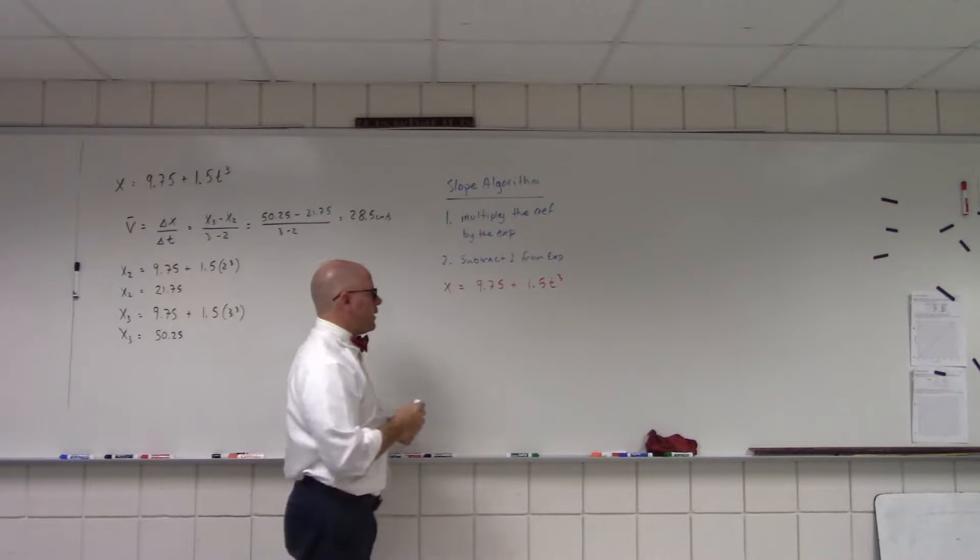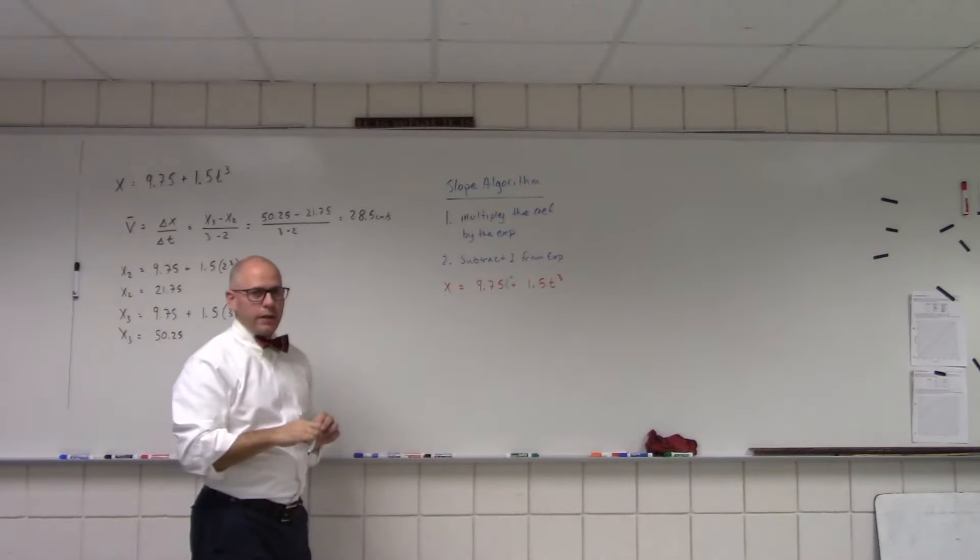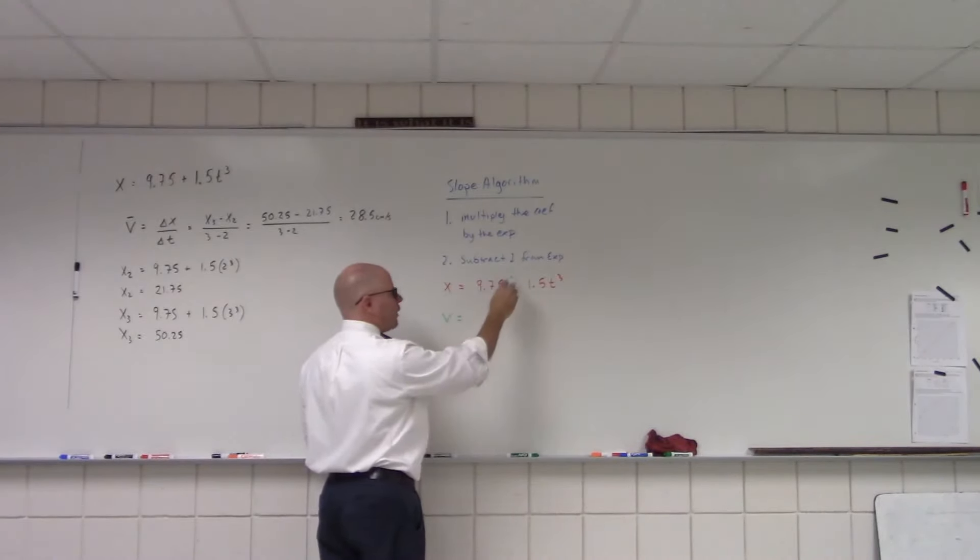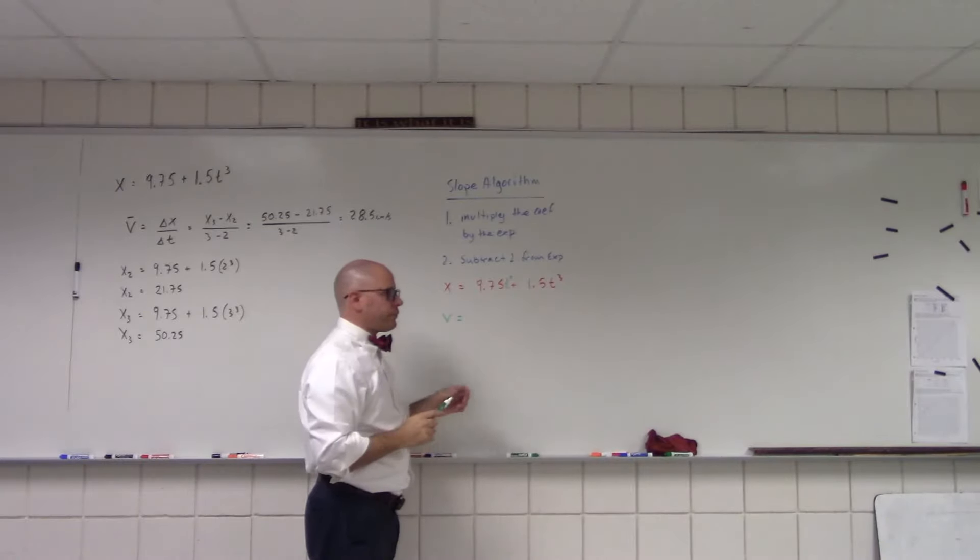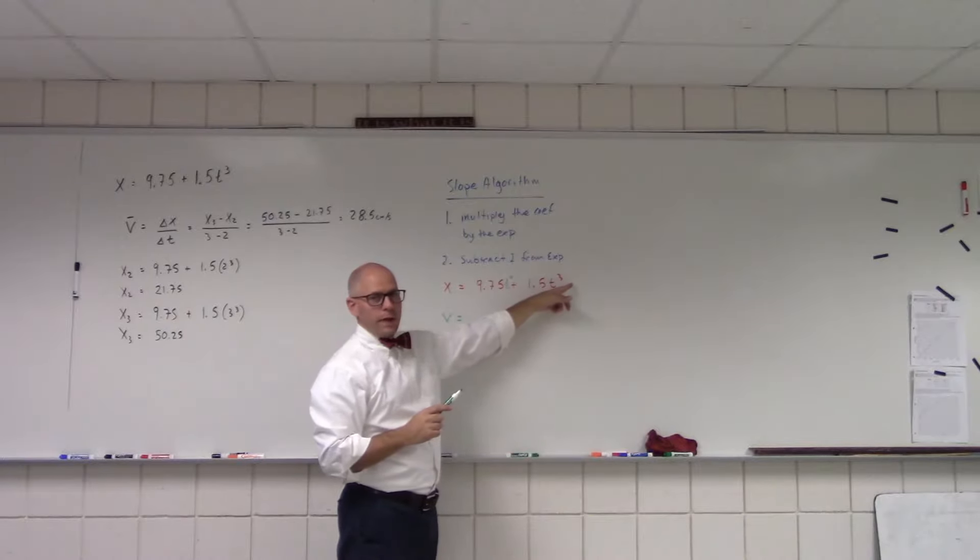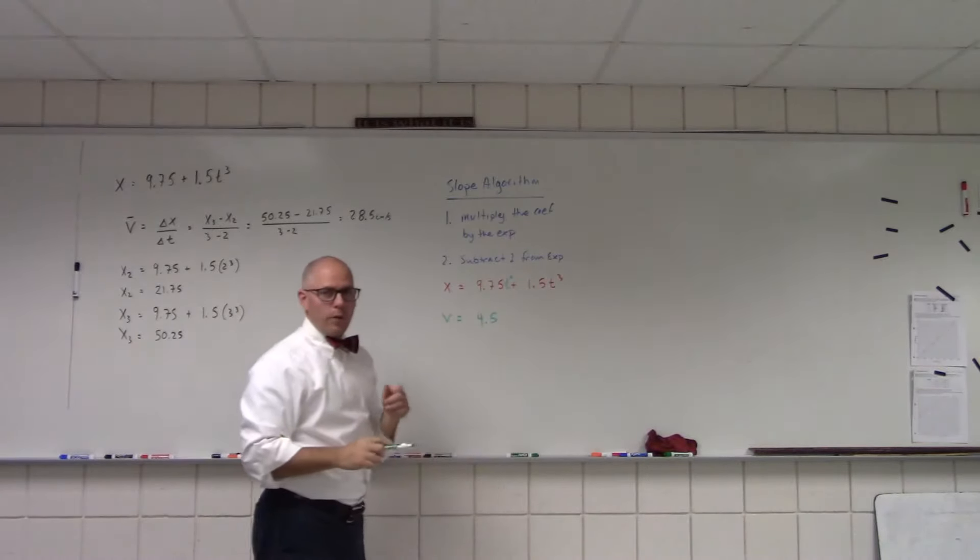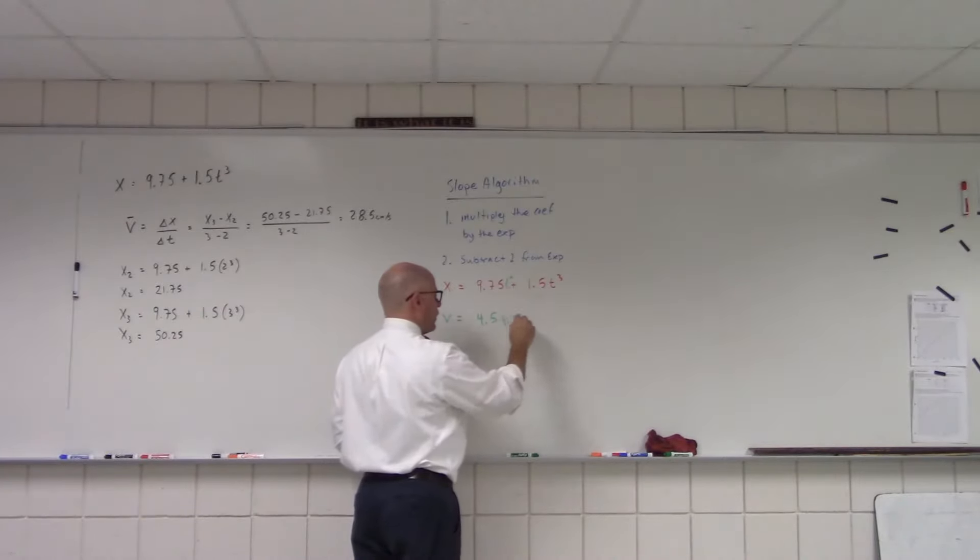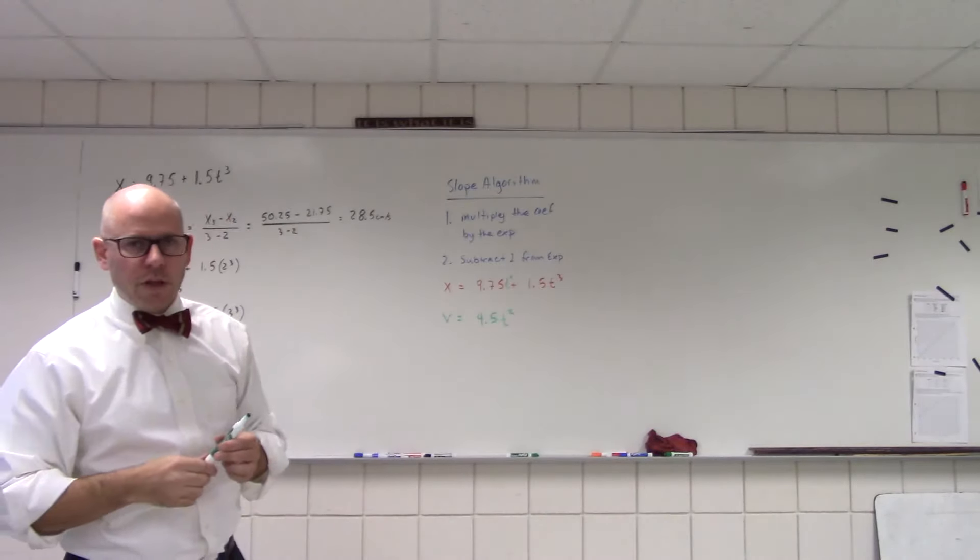The second step: subtract 1 from the exponent. So, let's look at our function. 9.75 plus 1.5 t cubed. I'm going to apply the algorithm to both of these. Now, don't forget when you look at this, this is really t raised to 0. So, if I want to get my velocity, multiply the exponent times the coefficient, but this time 0, so that whole term just goes away. And I'm left with this term here. So, first step, multiply by the exponent. So, 3 times 1.5 is 4.5 and then subtract 1 from 3. So, there's my velocity function.